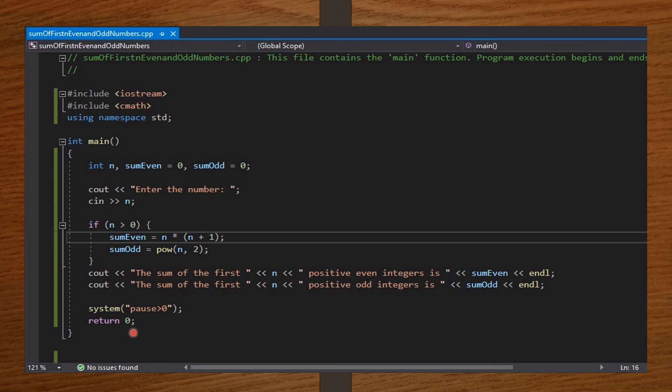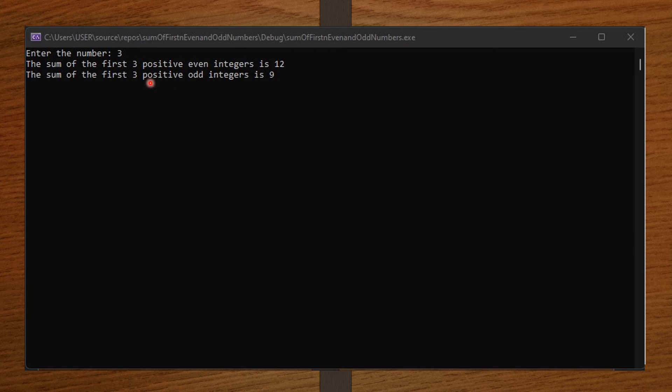So now let me input a value for n and we'll see how our code runs. So I'll enter the number 3. I want to find the sum of the first three positive even integers and the sum of the first three positive odd integers.